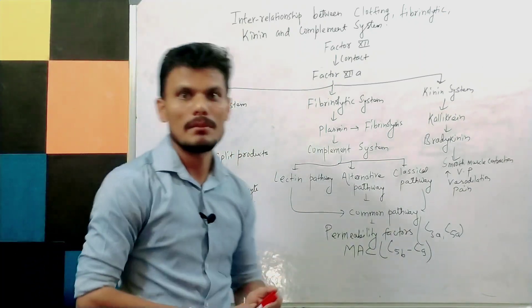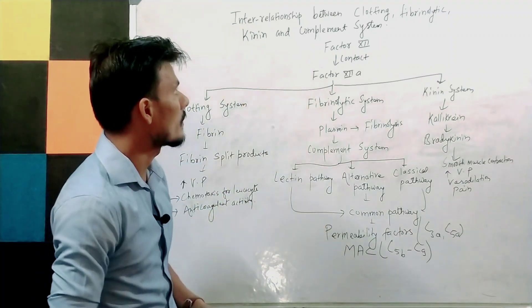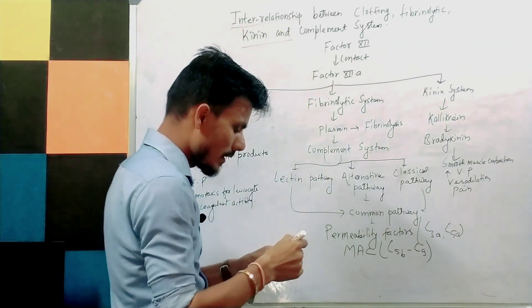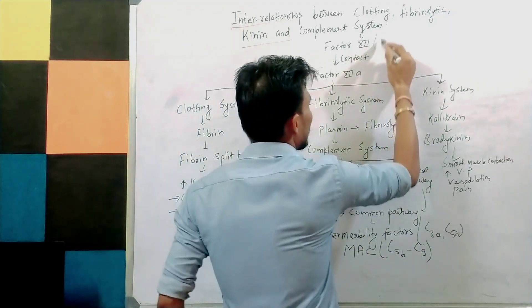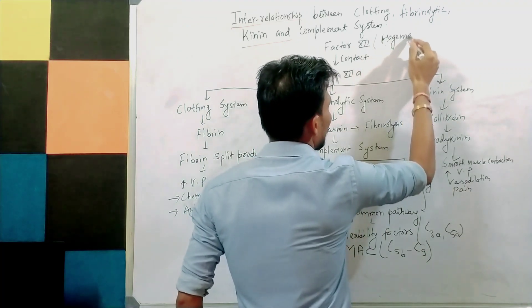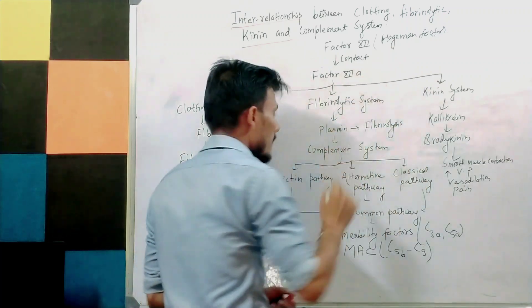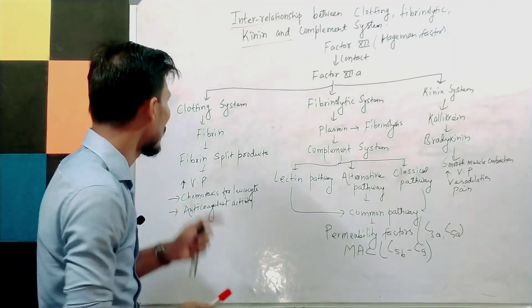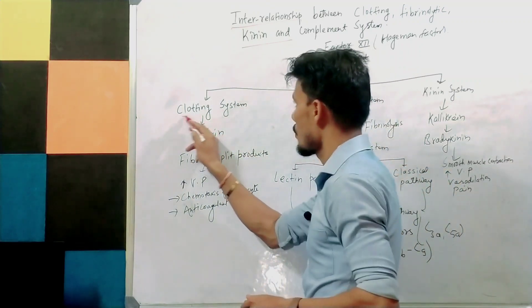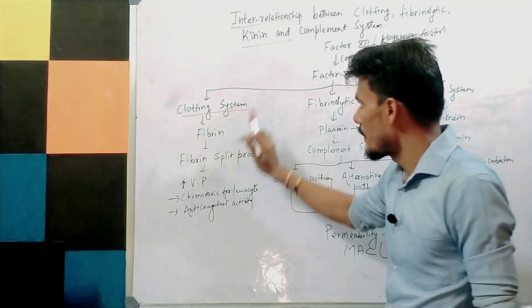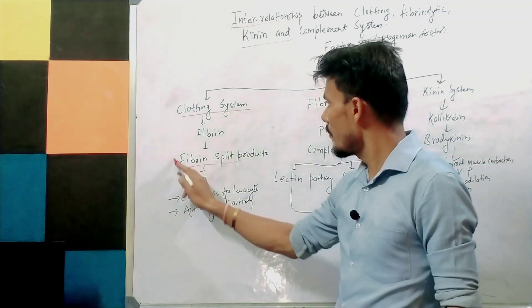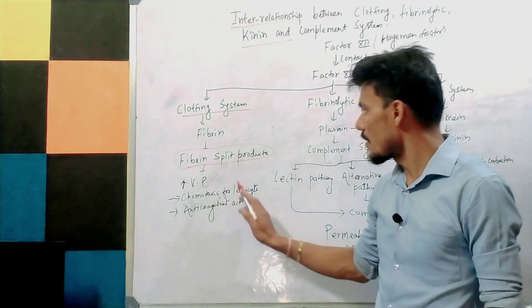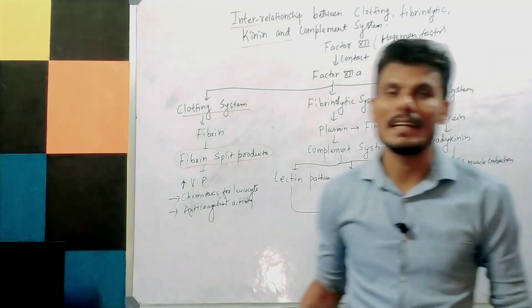Now talking about plasma-derived chemical mediators — as mentioned, they consist of the clotting, fibrinolytic, kinin, and complement systems. Regarding the inter-relationship between those systems: factor XII, a clotting factor also known as Hageman factor, when activated becomes factor XIIa. When factor XIIa is activated, it activates the clotting system. In the clotting system, fibrin is split into fibrin degradation products, which cause increased vascular permeability, chemotaxis for leukocytes, and anti-coagulant activity.